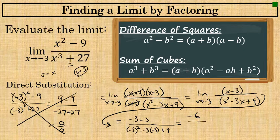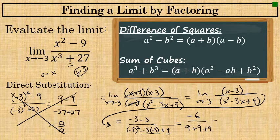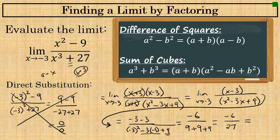Being careful with positives and negatives: negative 3 squared is 9, and negative 3 times negative 3 is positive 9, plus the final term of 9, giving a denominator of 27. So the result is negative 6 over 27.